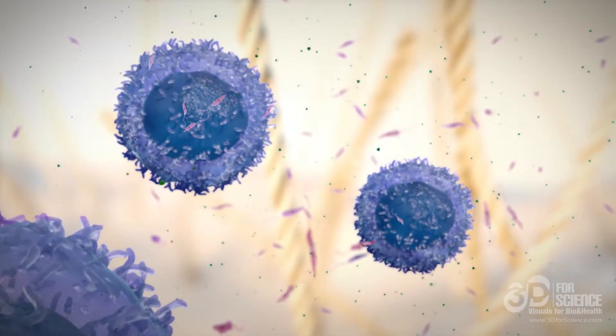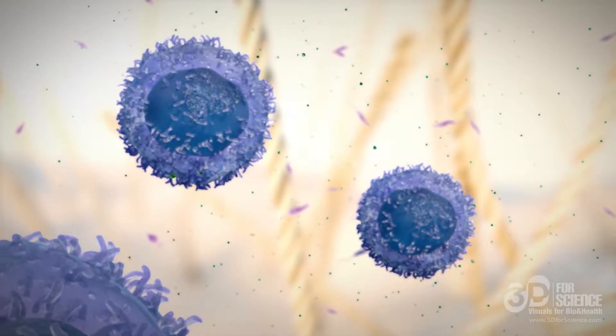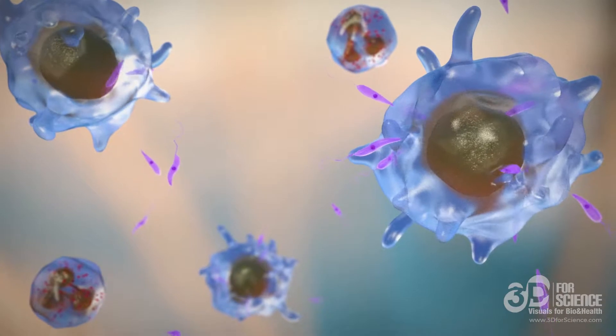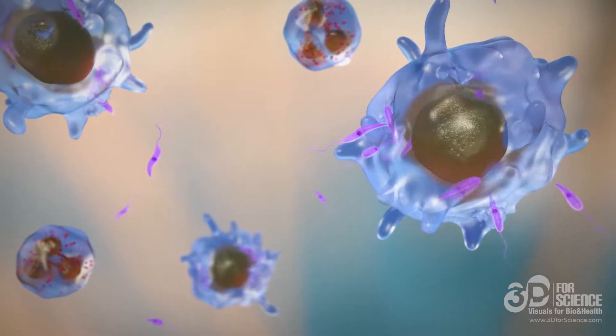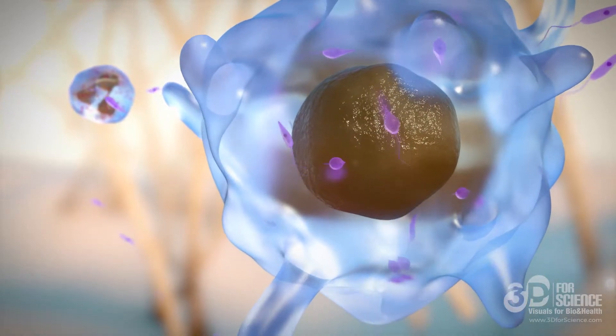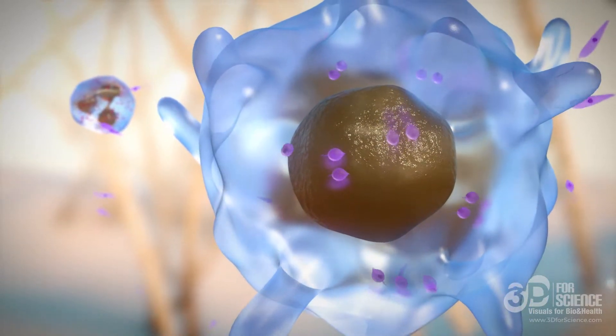Some promastigotes, however, are resistant to lysis and escape intact. Local immune cells attract more neutrophils and macrophages, which phagocytize parasites. Inside the macrophage, the promastigote transforms into an amastigote and multiplies.